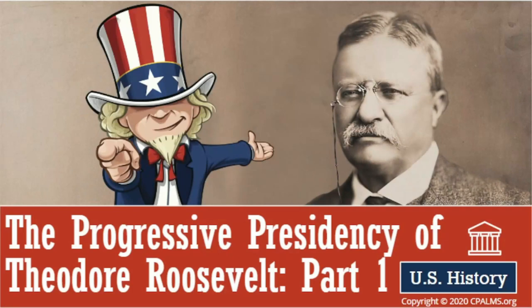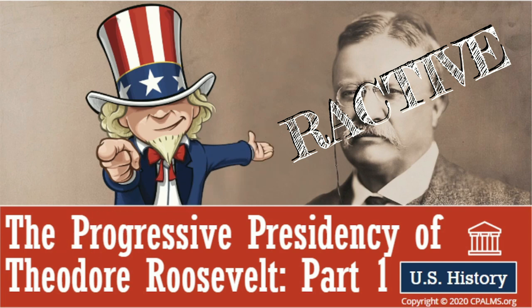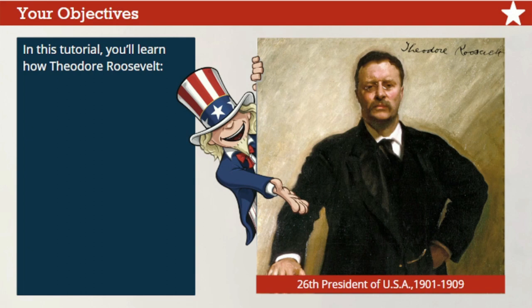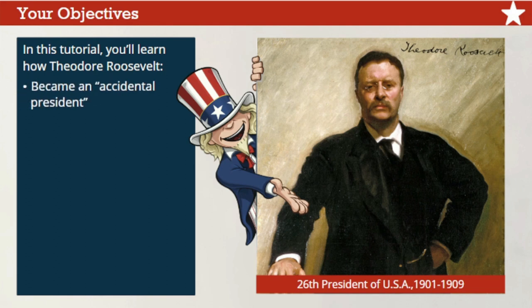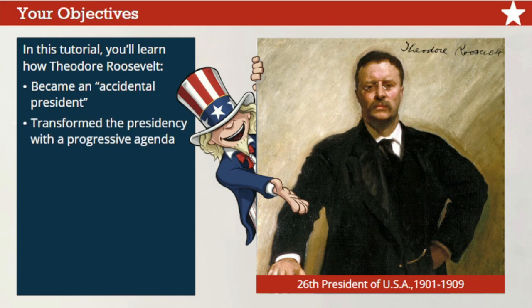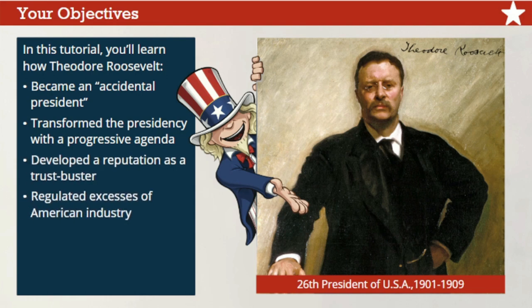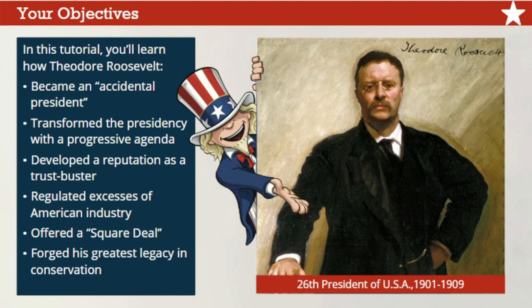Welcome to The Progressive Presidency of Theodore Roosevelt, an interactive U.S. history tutorial for students. In this two-part tutorial, you'll learn about Theodore Roosevelt, the 26th President of the United States, who served from 1901 to 1909. You'll learn how Roosevelt became an accidental president after the assassination of his predecessor, but transformed the office with a dynamic, progressive agenda — earning a reputation as a trust buster, offering a square deal to the American people, and forging his greatest legacy in conservation.